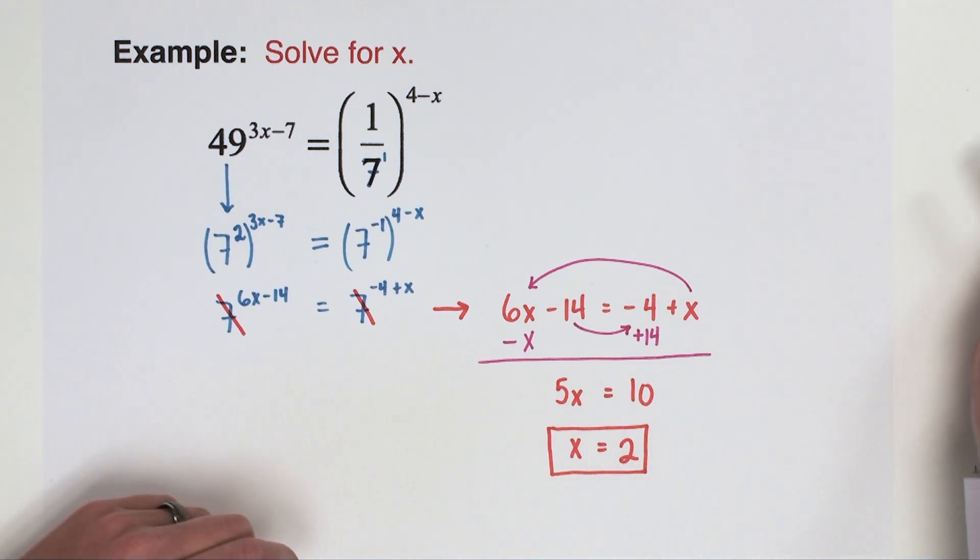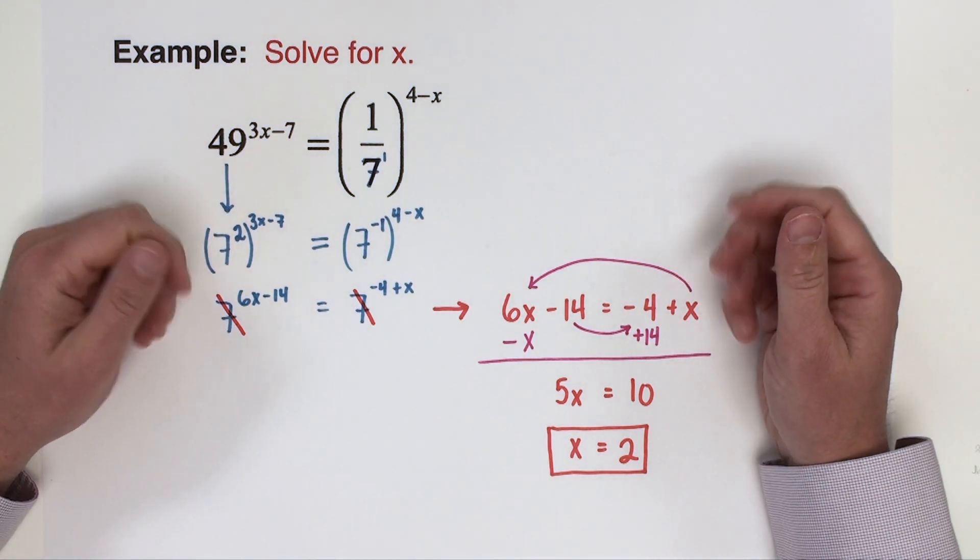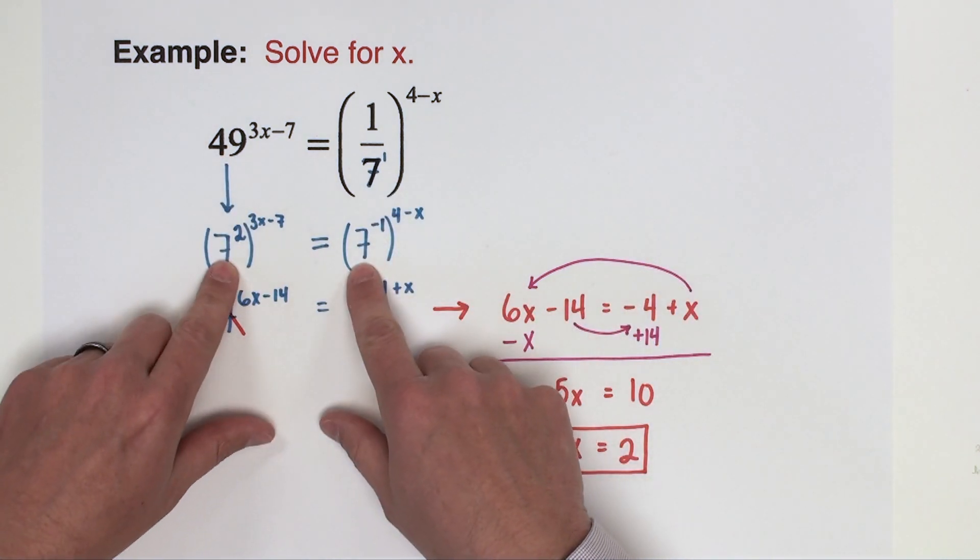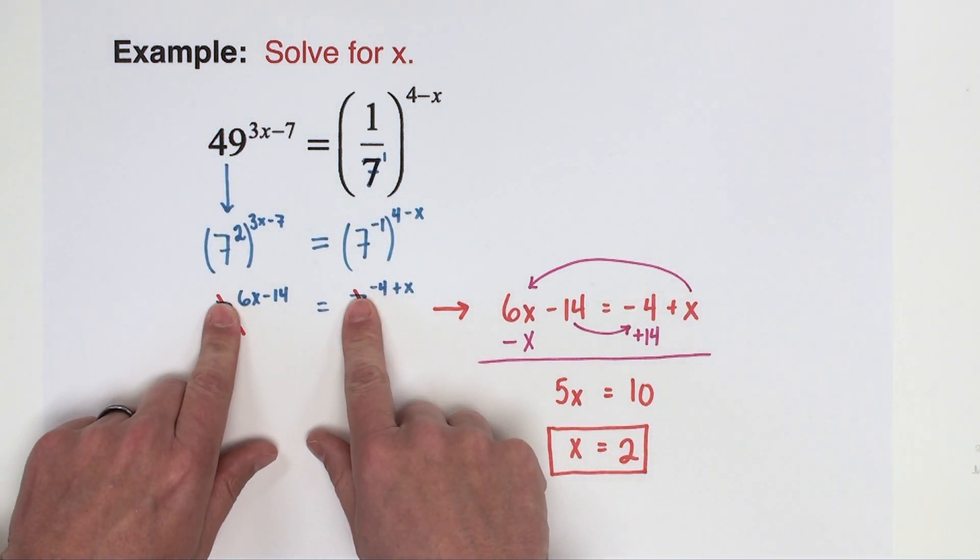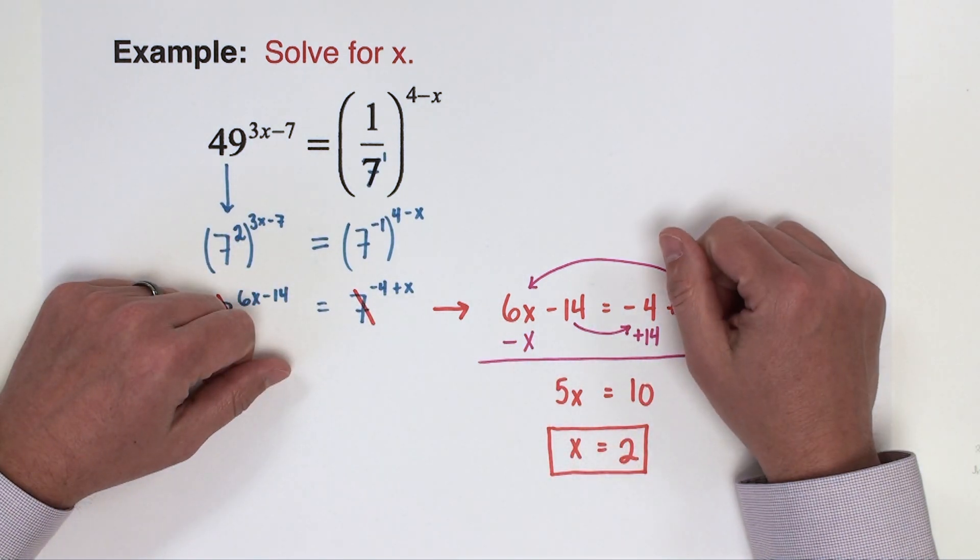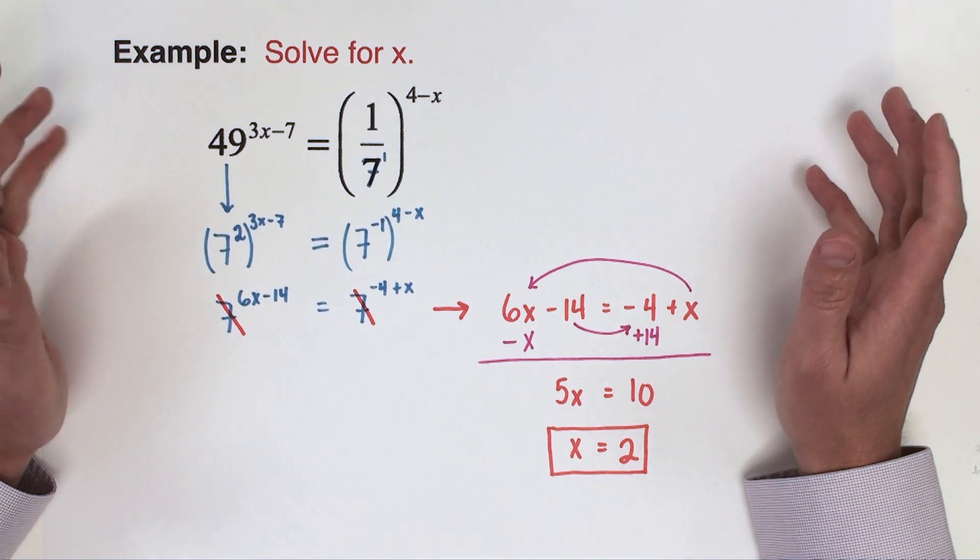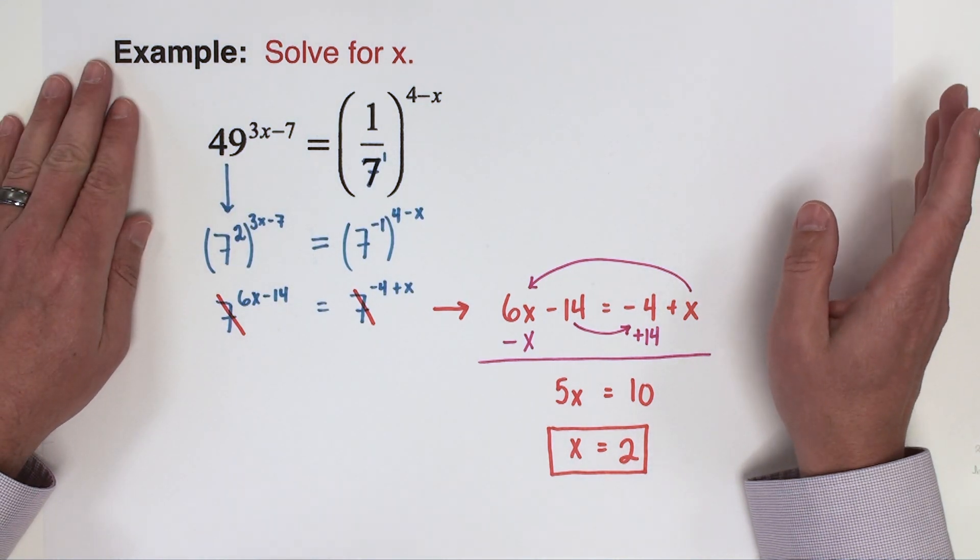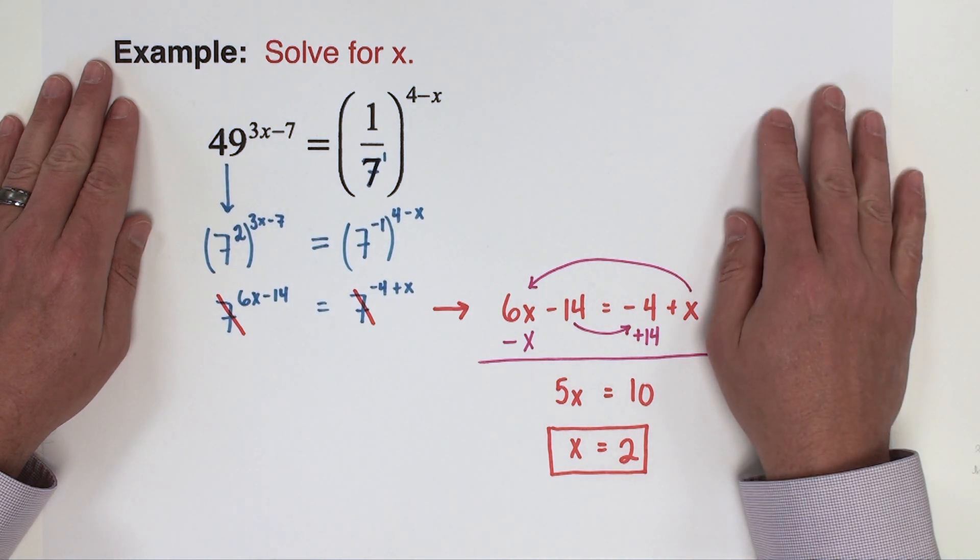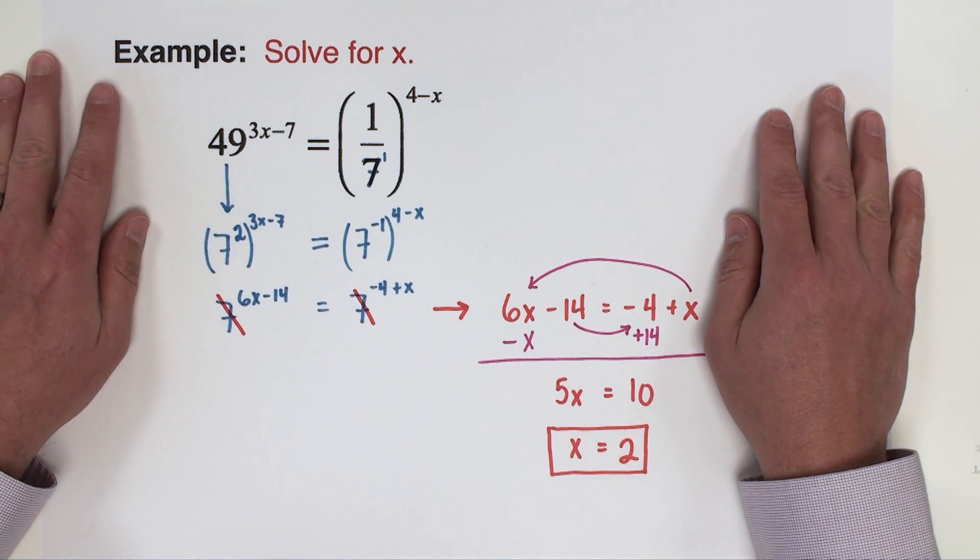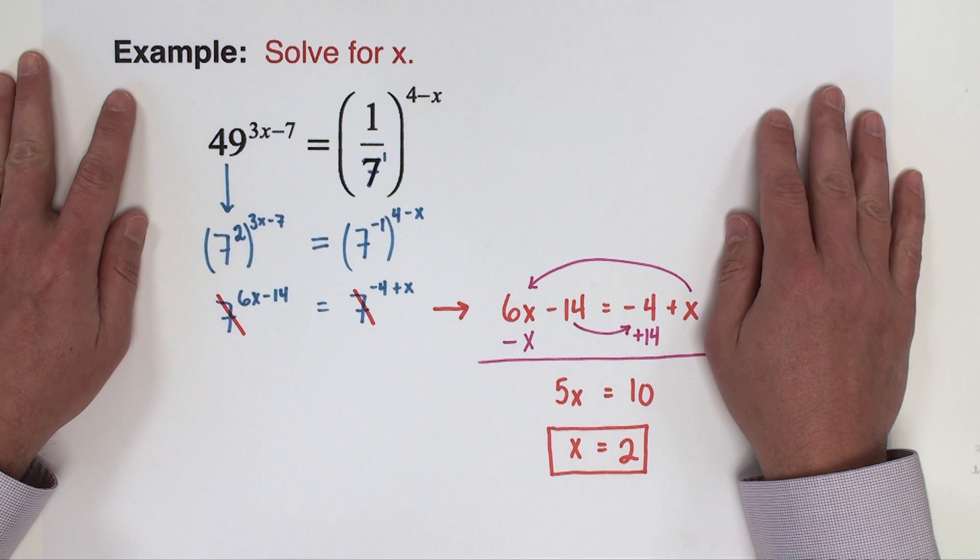There you have it. That concludes part one of our video on solving exponential equations, specifically with the technique of changing the base to a common base so we can remove it, and then we just set powers or exponents equal to each other. If you like this video and you like to see future content like this, please be sure to give this video a like, and you can support the channel by subscribing as well. Thank you very much. This should take you right into part two of this series of videos if you wish to view further.